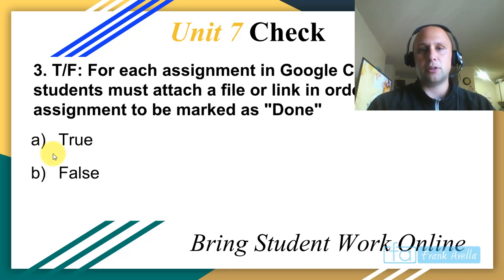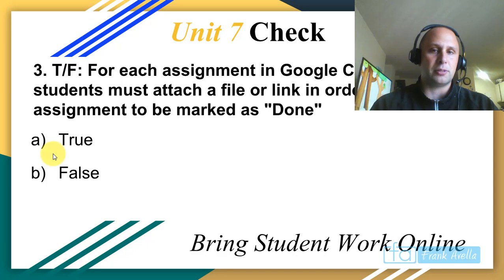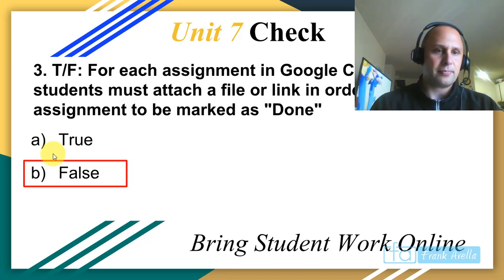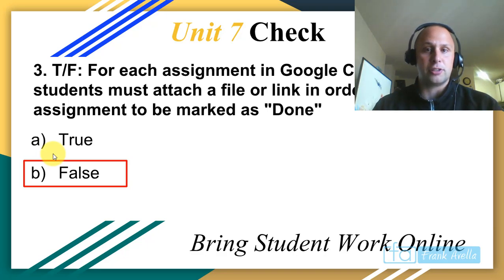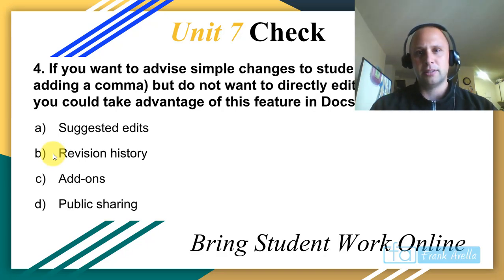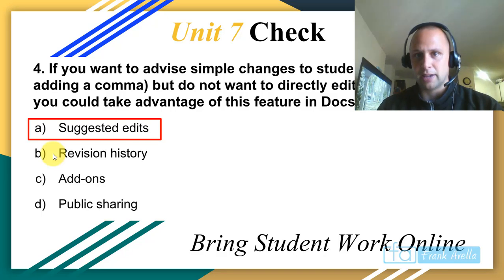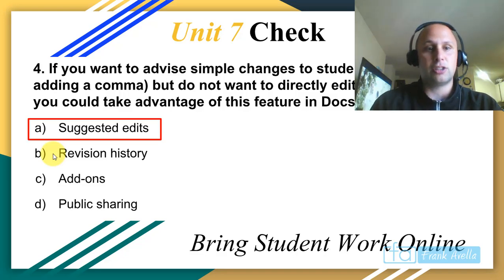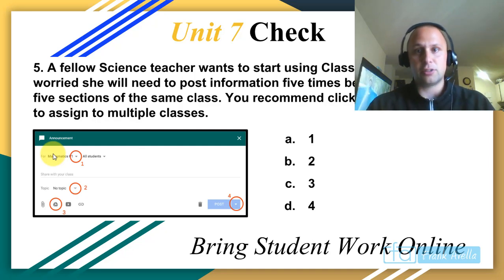True or false: for each assignment in Google Classroom, students must attach a file or link for the assignment to be done. That's false — they have the option to mark it as done. An assignment could just be 'read chapter six' and they mark it as done without submitting a file. If you want to advise simple changes to student work directly on the document — like adding a comma — without directly editing, use suggested edits.